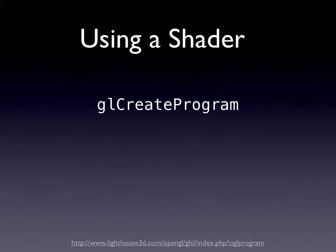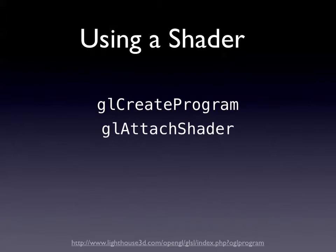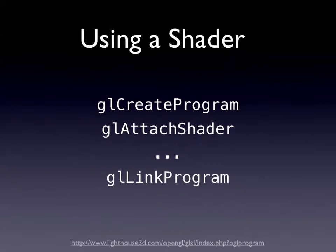Once you've got your shader, you call GL create program, then GL attach shader. Create program allows you to group shaders together — so if you have a vertex and a fragment shader, you can put them both in the same program. A vertex shader manipulates vertices; a fragment shader manipulates things like textures and what's actually going to be output onto the screen. Once you've added all of your shaders, you link the program, much like compiling and linking in Xcode.